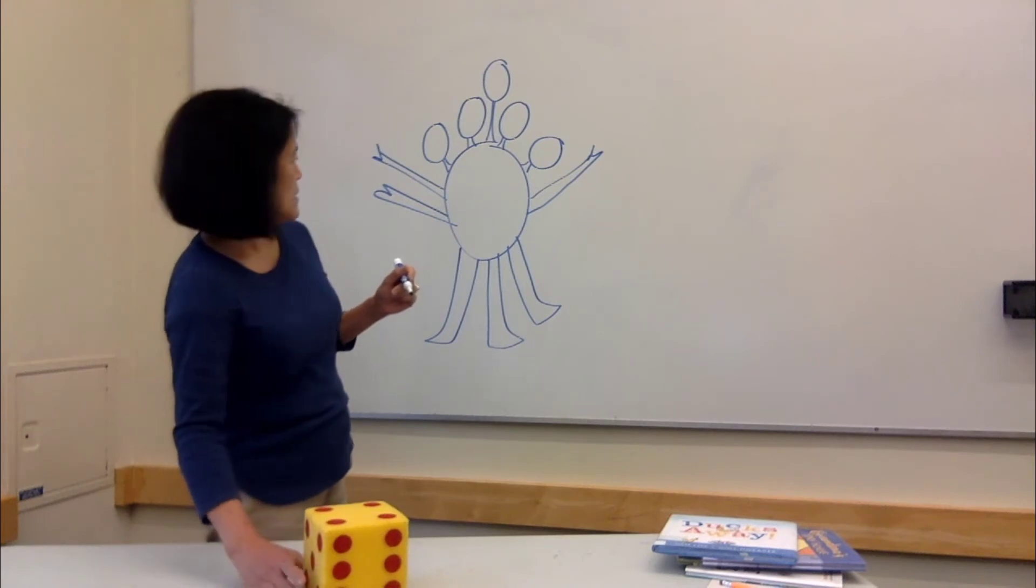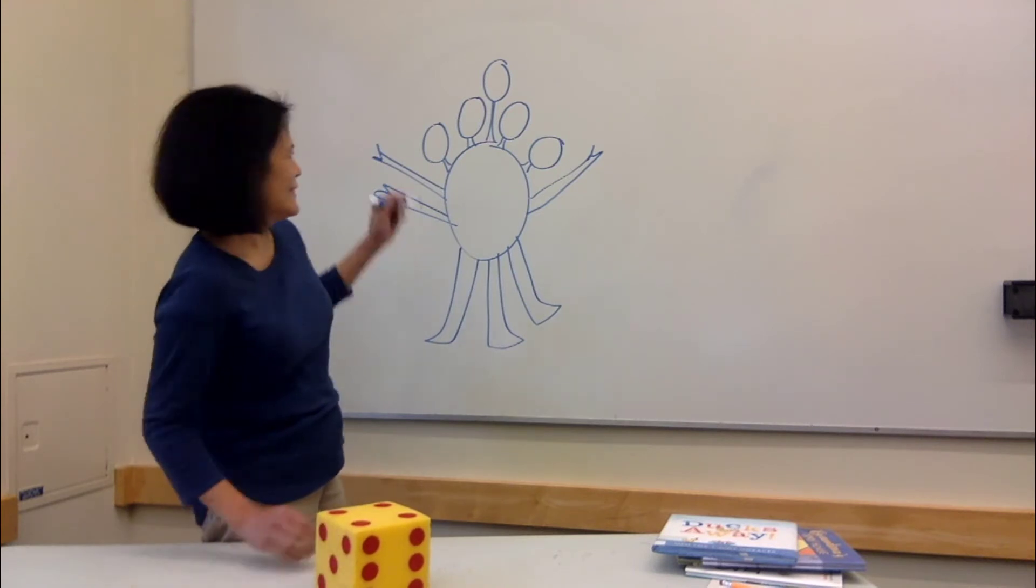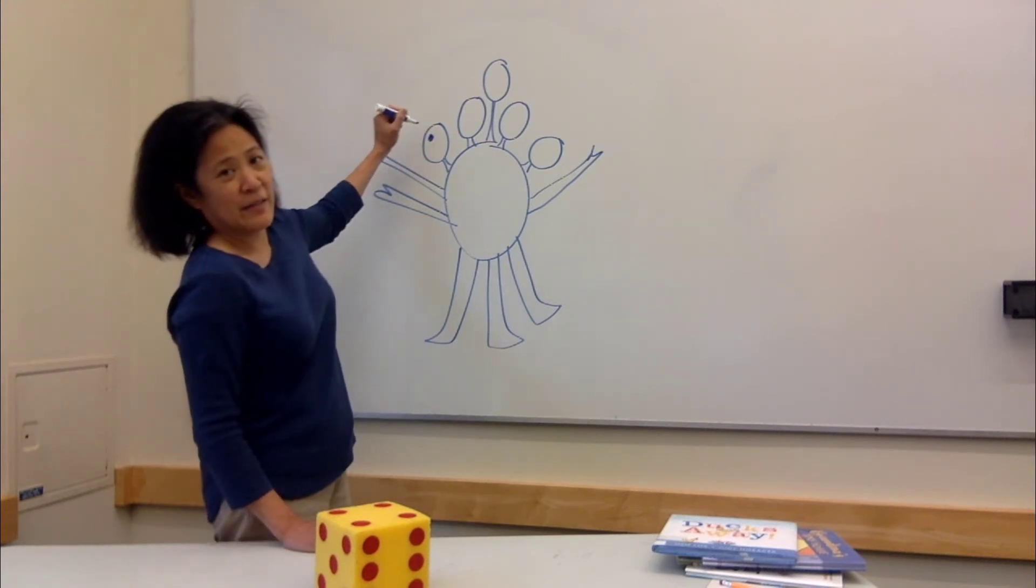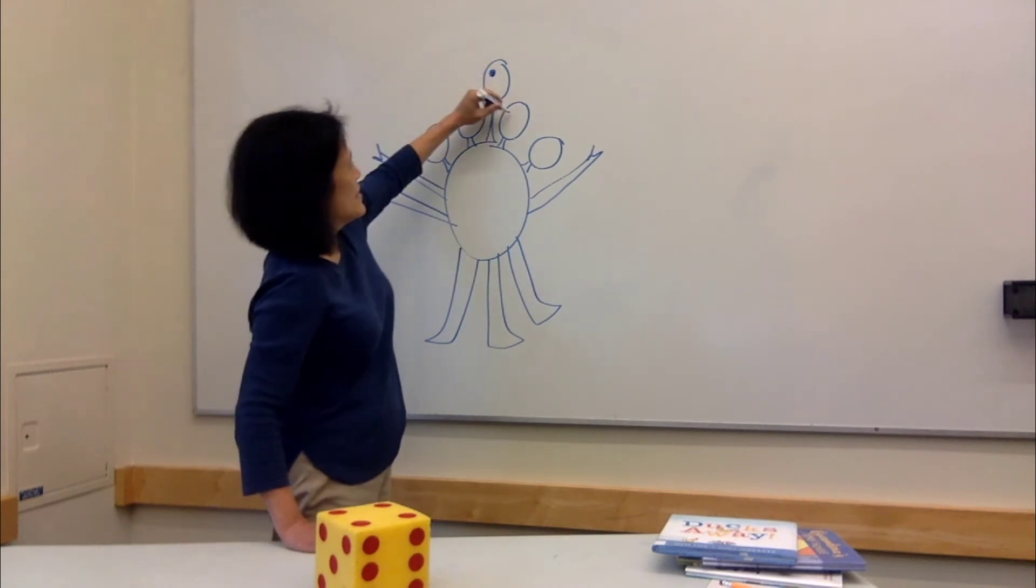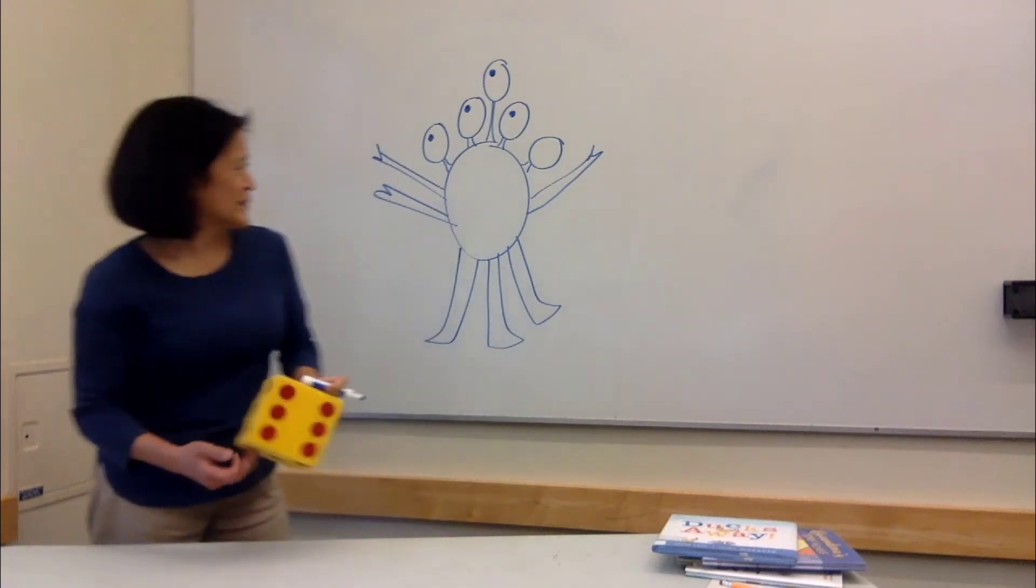Let's do eyes. I'm going to count ordinal numbers. This is the first eye, second, third, fourth. And this head's just not going to get an eye.